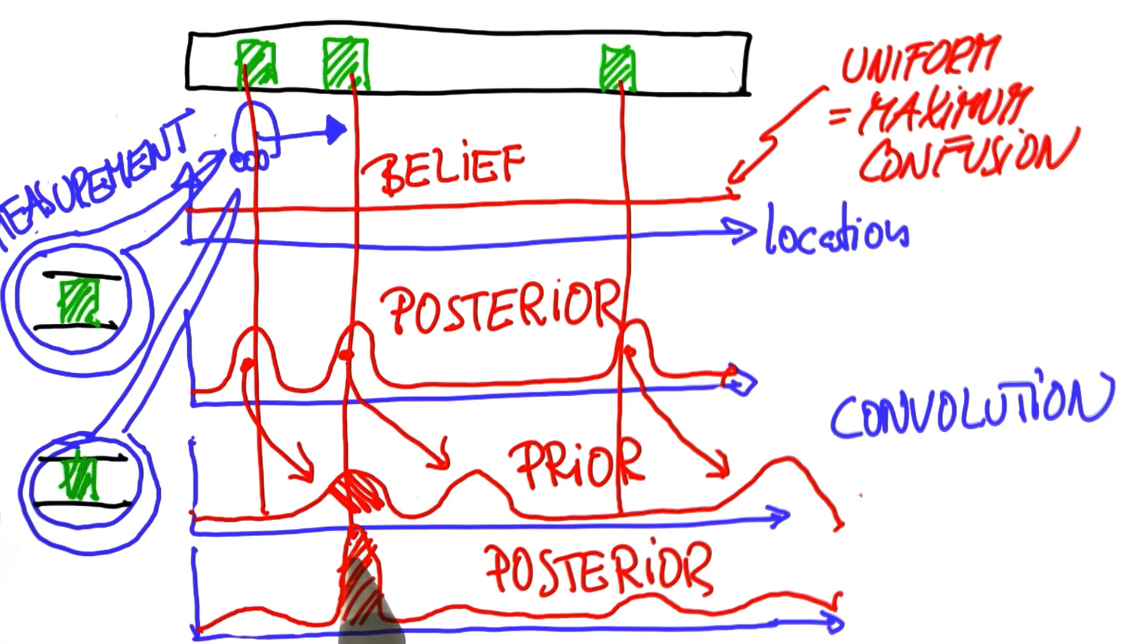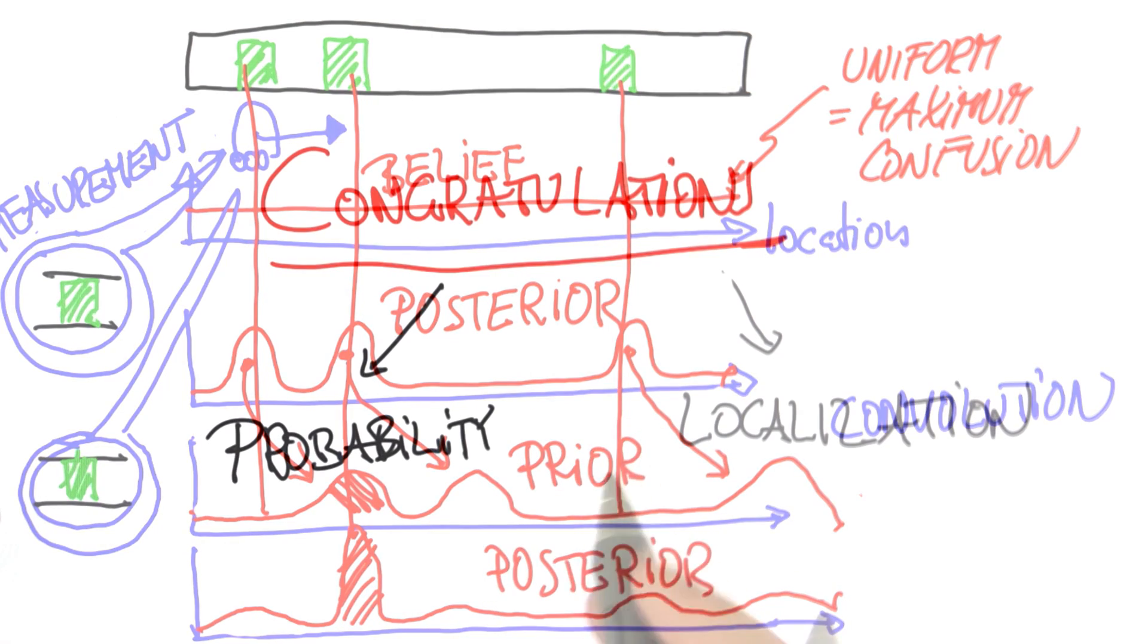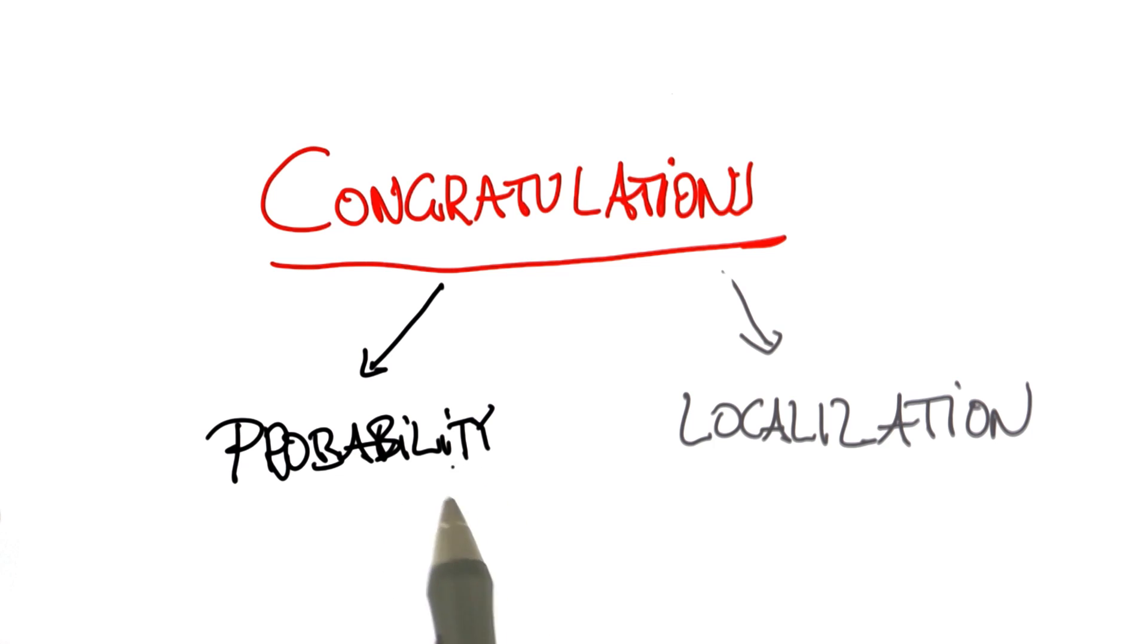At this point, our robot has localized itself. If you understood this, you understand probability and you understand localization. So congratulations! You understand probability and localization. You might not know yet, but that's really a core aspect of understanding a whole bunch of things I'm going to teach you in the class today.